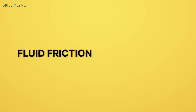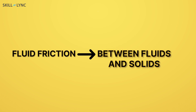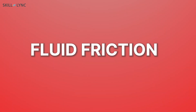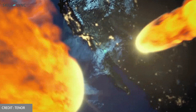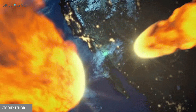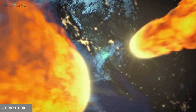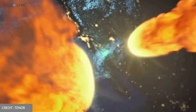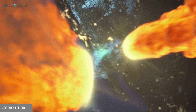Friction does not exist only between solids — it also exists between fluids and solids. This type of friction is called fluid friction. A good example of fluid friction is falling stars. These falling stars are nothing but meteorites from outer space which burn up in the atmosphere due to friction between the atmosphere and the meteorites.